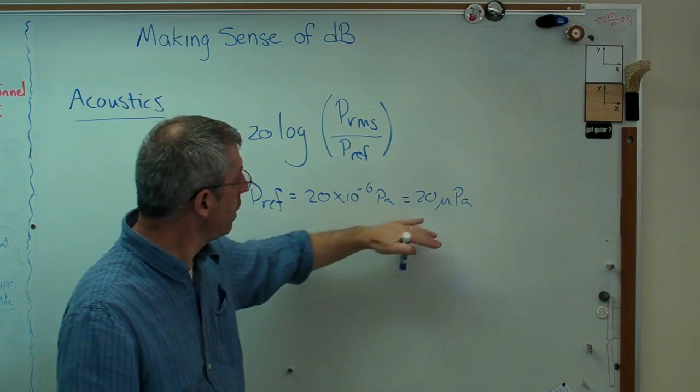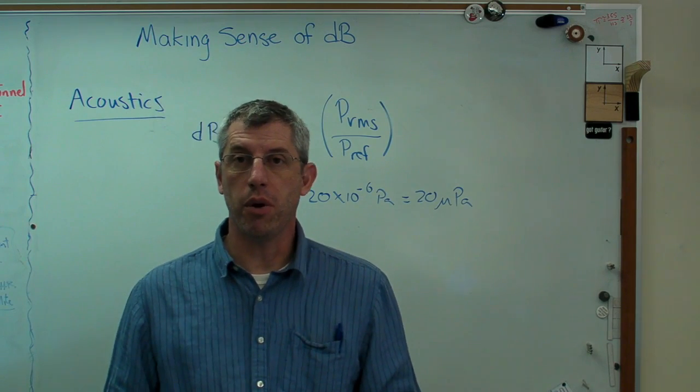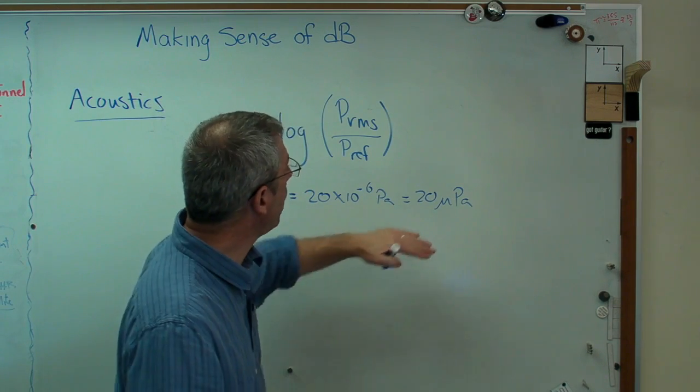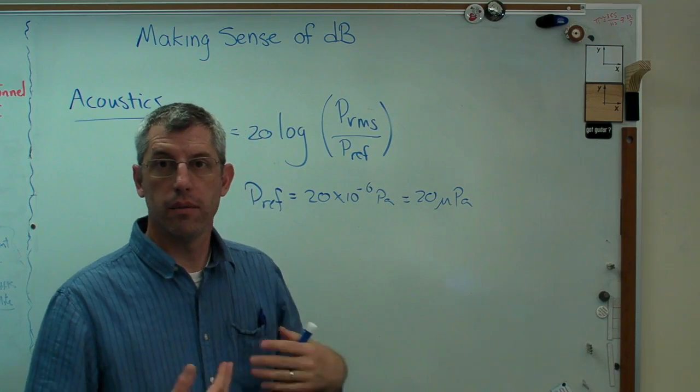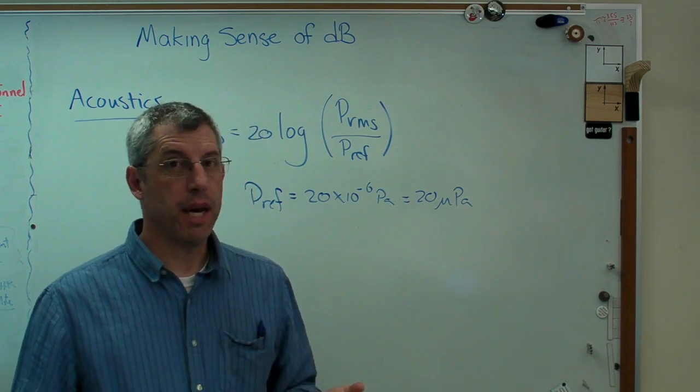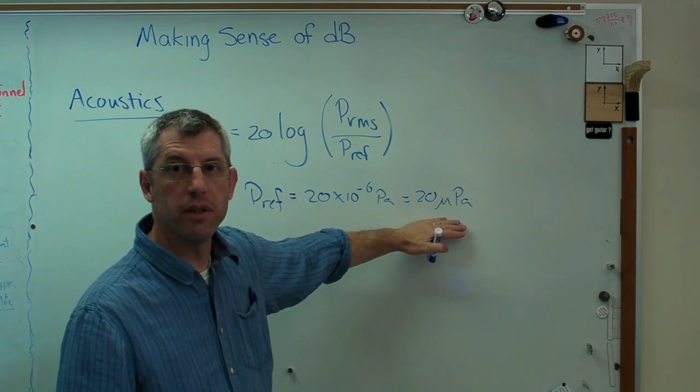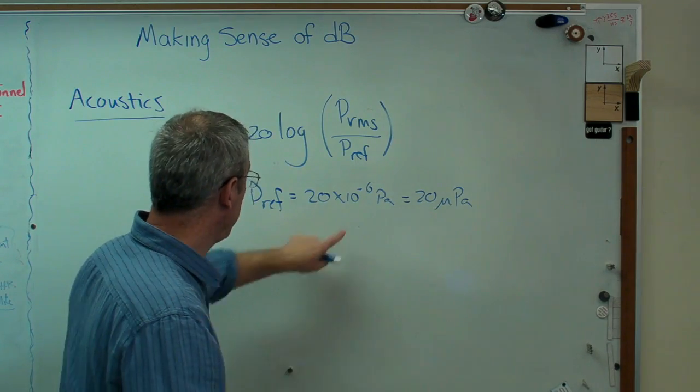20 micropascals is accepted as basically the lower limit of volume that any person could be expected to hear. If the volume is lower than that, the amplitude of the signal is less than that in the RMS scale, you can't hear it. Now I probably couldn't hear it down there anyway, but some of you with really good hearing might just be able to detect that.